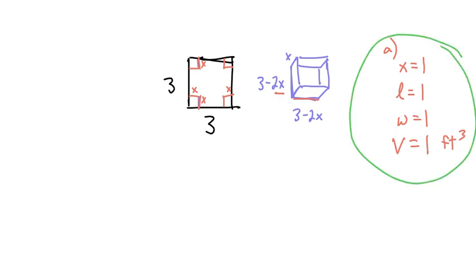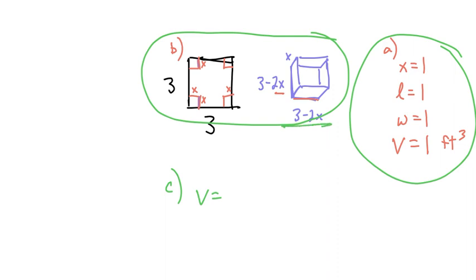But then on letter B, I guess that's kind of what I did up here. I'll just rename that. I think the picture is kind of like letter B. So then on letter C, we can create the equation for the volume by using this length times width times height. And x times 3 minus 2x times 3 minus 2x.